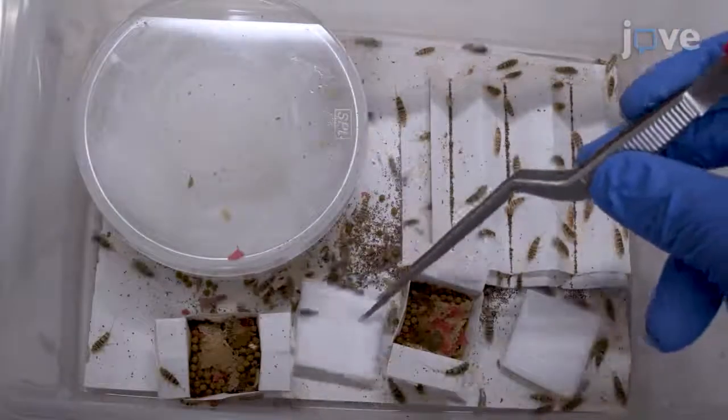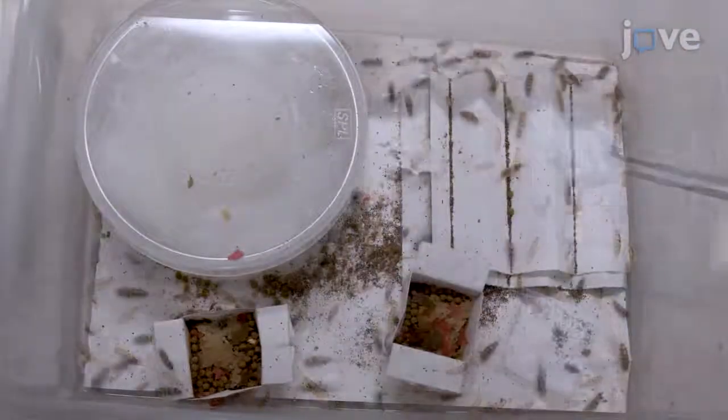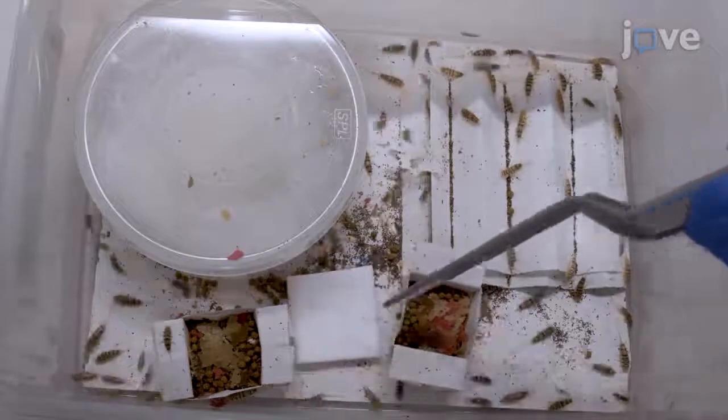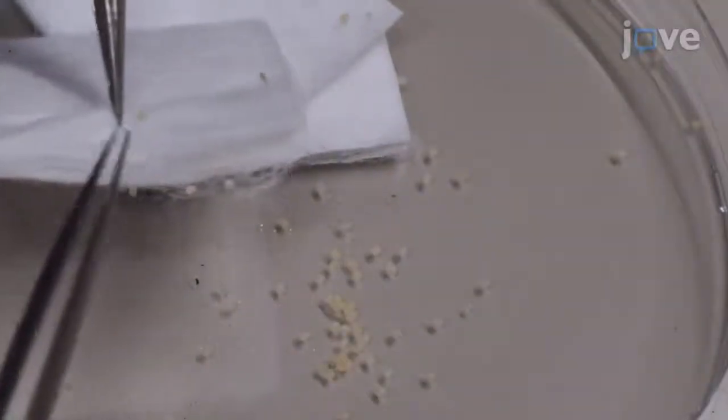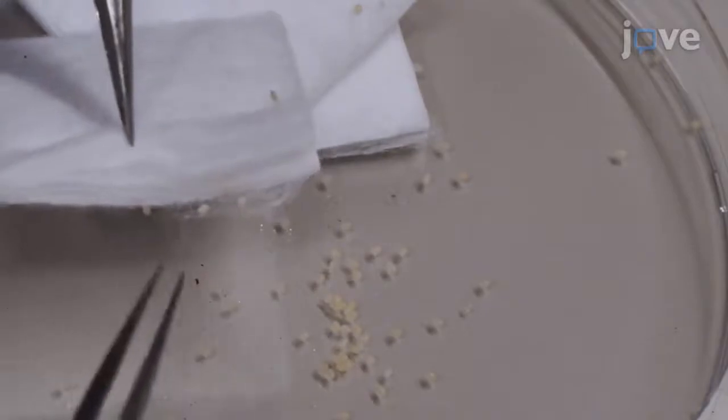On the day of injection, replace the cotton inside the containers with new cotton. Eight hours later, collect the eggs from the layered cotton by separating the layers using forceps.